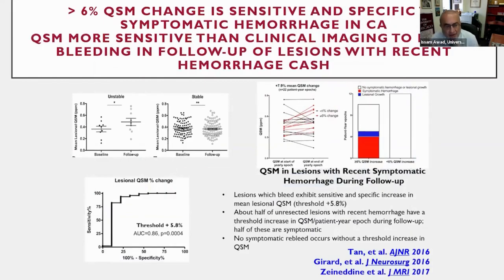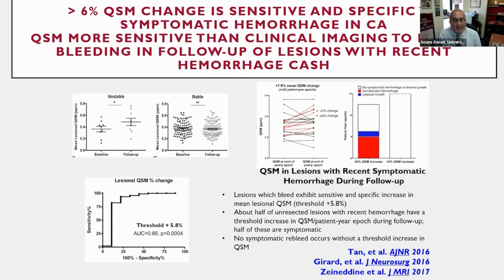Does that really matter clinically? If you take cavernous angiomas that have never bled before — stable lesions at baseline — and follow them forward, a very small percent will bleed during one year; we call those unstable. If we had done QSM at baseline and at the end of one year, the stable lesions show QSM remaining remarkably unchanged. However, a lesion that develops a symptomatic hemorrhage during the year has a change in QSM that is very tight.